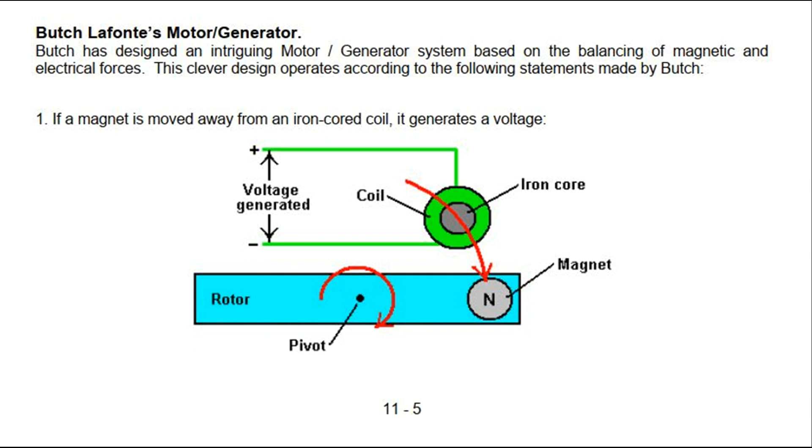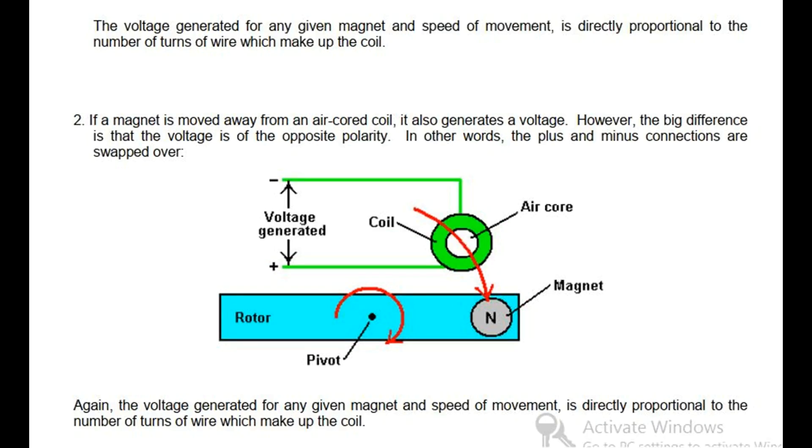Iron core, rotor's magnet. The voltage generated for any given magnet and speed of movement is directly proportional to the number of turns of wire which make up the coil.